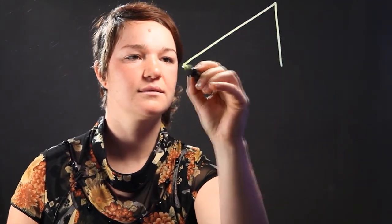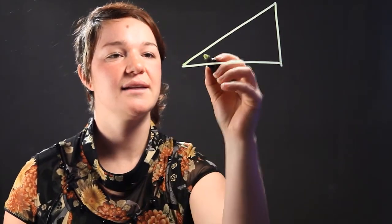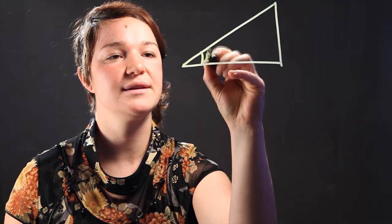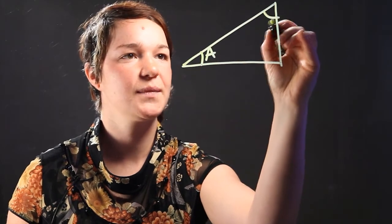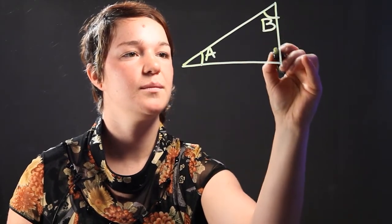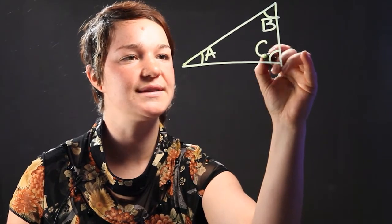So, let's draw a triangle first. Here we have our triangle. And what the Law of Sines says is that here you have your angles. We'll call this angle A, we'll call this angle B, and this is angle C.